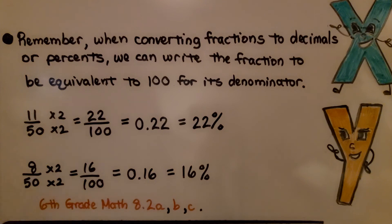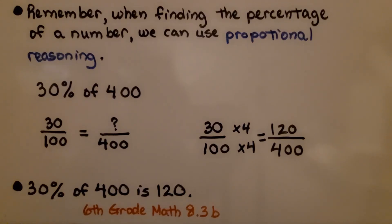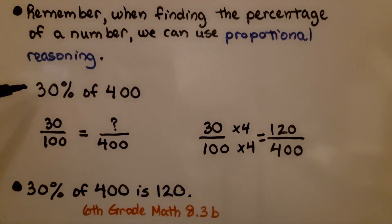If you're very rusty and don't remember this, I'm going to have a link to 6th grade math 8.2a, b, and c in the description so you can do a quick review before you move forward. Remember, when finding the percentage of a number, we can use proportional reasoning. If we need 30% of 400, well, 30% is 30 hundredths. Using proportional reasoning, 100 times something is 400, that's times 4. And 30 times 4 is 120. We know that 30% of 400 is 120. I'll have a link to 6th grade math 8.3b in the description. Sometimes it's hard to remember what you did a year ago, but it doesn't hurt to do a quick review.